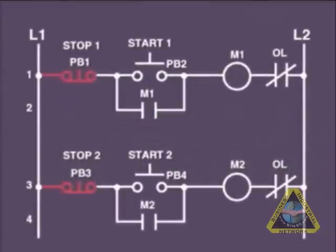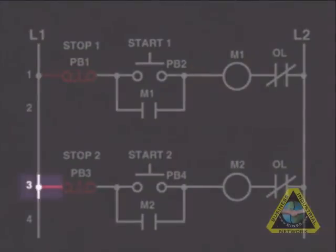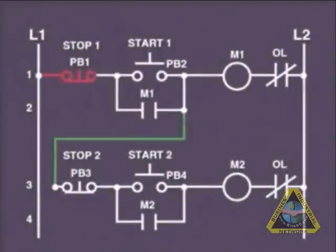We can easily accomplish this by knowing that at this point, the circuit provides information with memory that M1 is running. So, if we connect our first line of our M2 starter circuit line 3 to this point, we would get available power for M2 only if M1 is on.